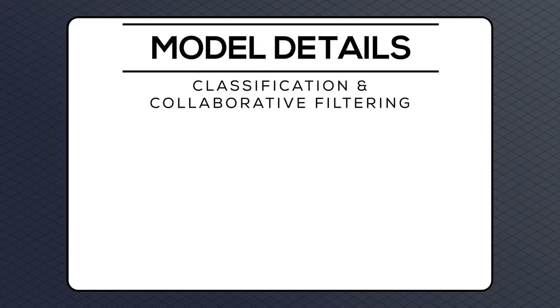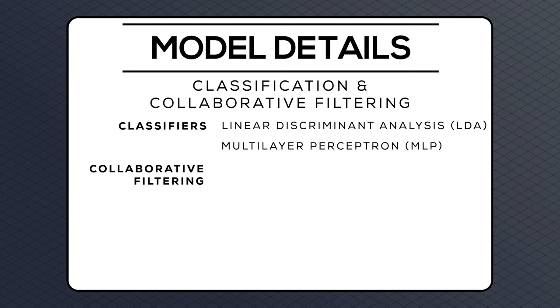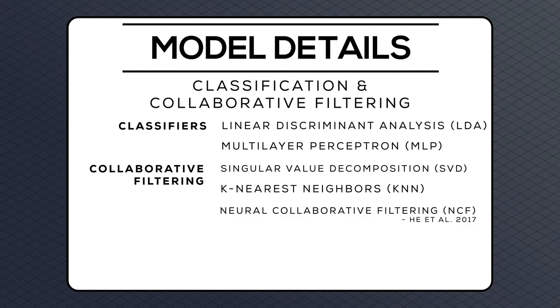To rule out the possibility that inferring preferences from brain signals might rely on a highly specialized architecture, we tested several computational methods for both inferring preferences and performing collaborative filtering. For inferring preferences from brain signals, we used linear discriminant analysis and a multilayer perceptron. The collaborative filtering step was tested with three methods: singular value decomposition, k-nearest neighbors, and a neuro-collaborative filtering architecture as proposed by Hua et al. in 2017.